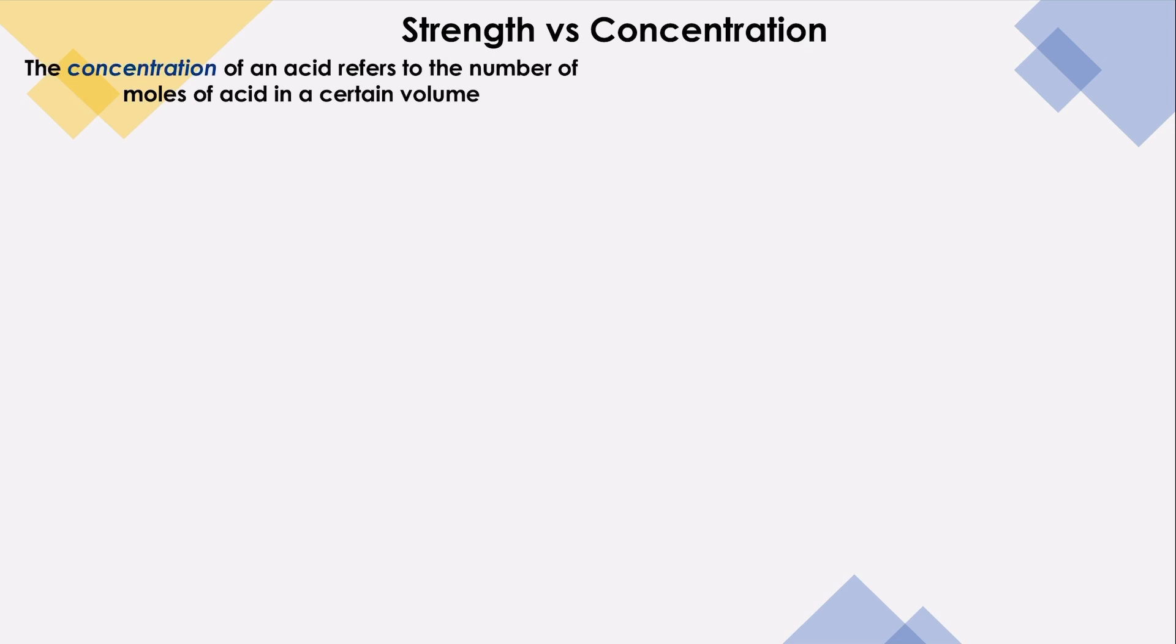First of all, the concentration of an acid refers to the number of moles of acid in a certain volume. For that reason we can use this formula: concentration of acid equals N over V. So if I have the concentration of ethanoic acid 0.1, it means that I have number of moles of ethanoic acid equal to 0.1 in every cubic decimeter.